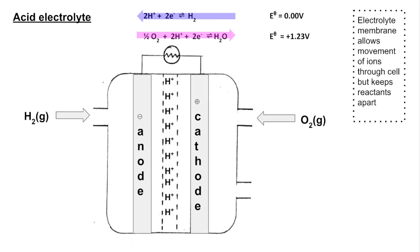The hydrogen comes to the anode and loses its electrons, forming H⁺ ions. Because it's an acid electrolyte, it's already populated with H⁺ ions. The electrons are given up and go around the external circuit. The H⁺ ions travel through what's called the electrolyte membrane — the dotted line — which allows the movement of ions through the cell but keeps the hydrogen and oxygen apart, because if they came into contact it could be explosive.